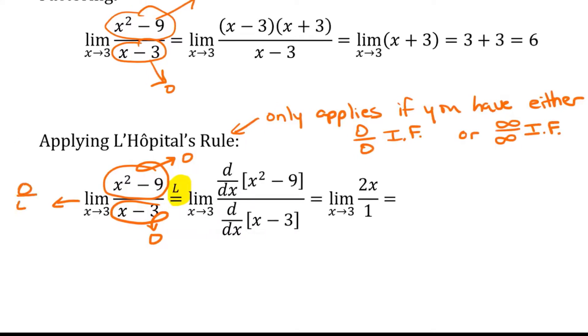So in this case, we had a 0 over 0 indeterminate form. So that's why we were able to use L'Hôpital's rule. So now we have the limit as x approaches 3 of just 2x and we can plug in and we can get 6, which is the same answer we got before.